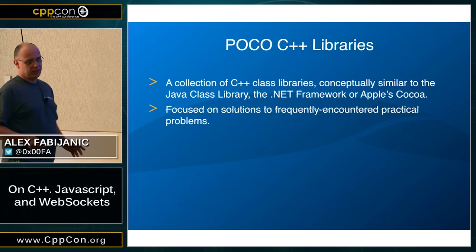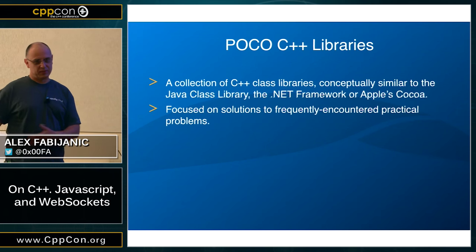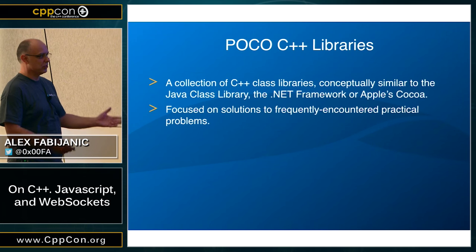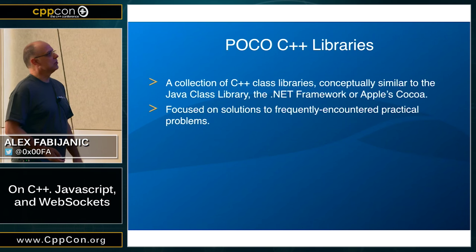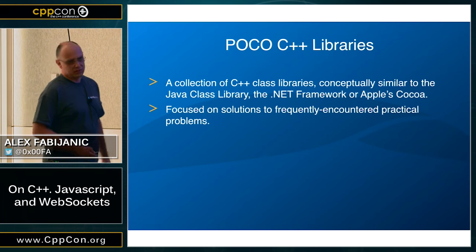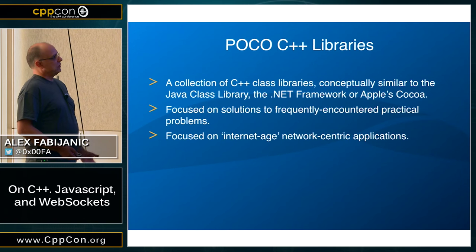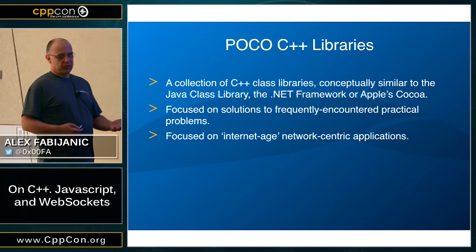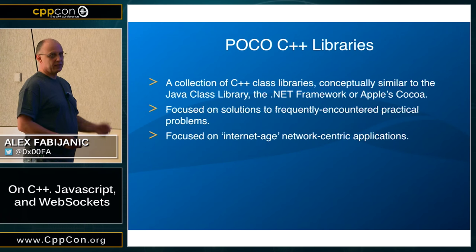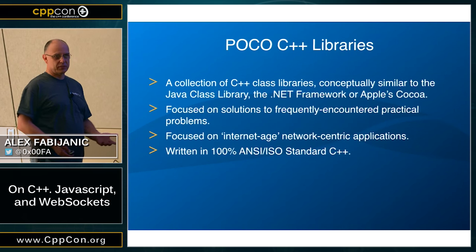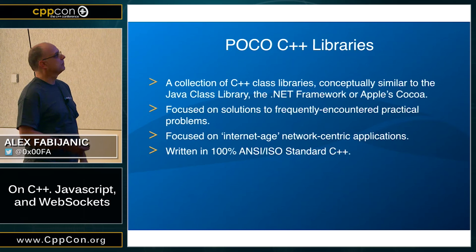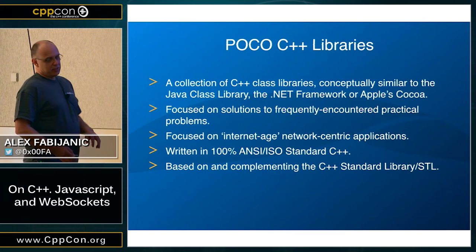POCO is focused on solutions to frequently encountered everyday problems. Back in 2004, if you had XML, you had to use libxml2, which was really painful. And anything else you'd try used a different library with a different style — it was painful. So that's what POCO brings: consistency. You can have conventions and your code looks the same wherever you go. It's focused on internet-age, network-centric applications, with strong support for networking. It's really simple to create a small web server, TCP server, or SMTP client. And it's 100% standard C++, so you can go from one platform to another pretty much without pain — write once, compile anywhere.